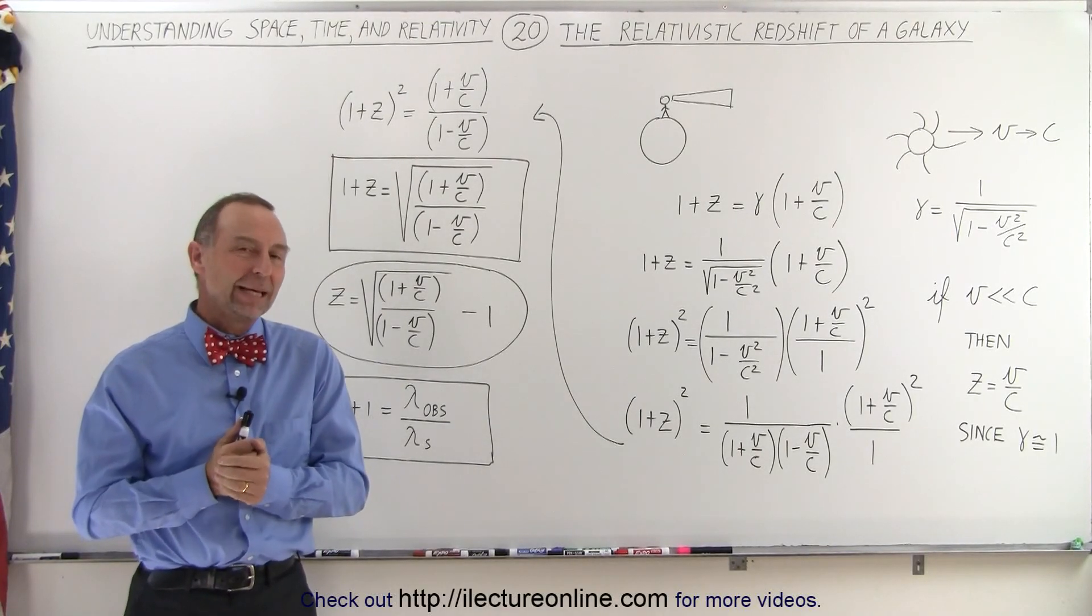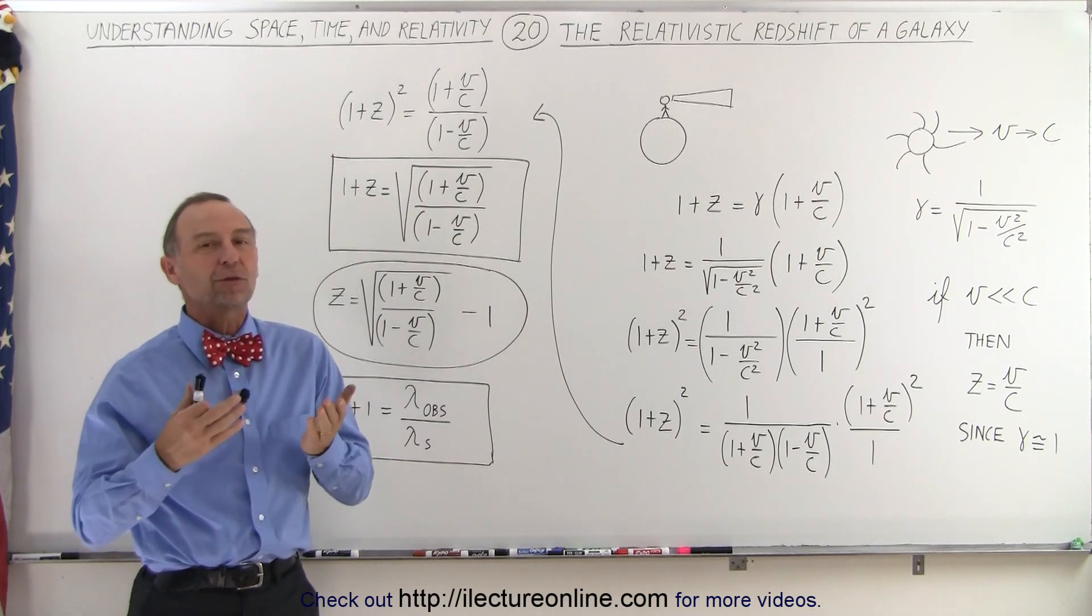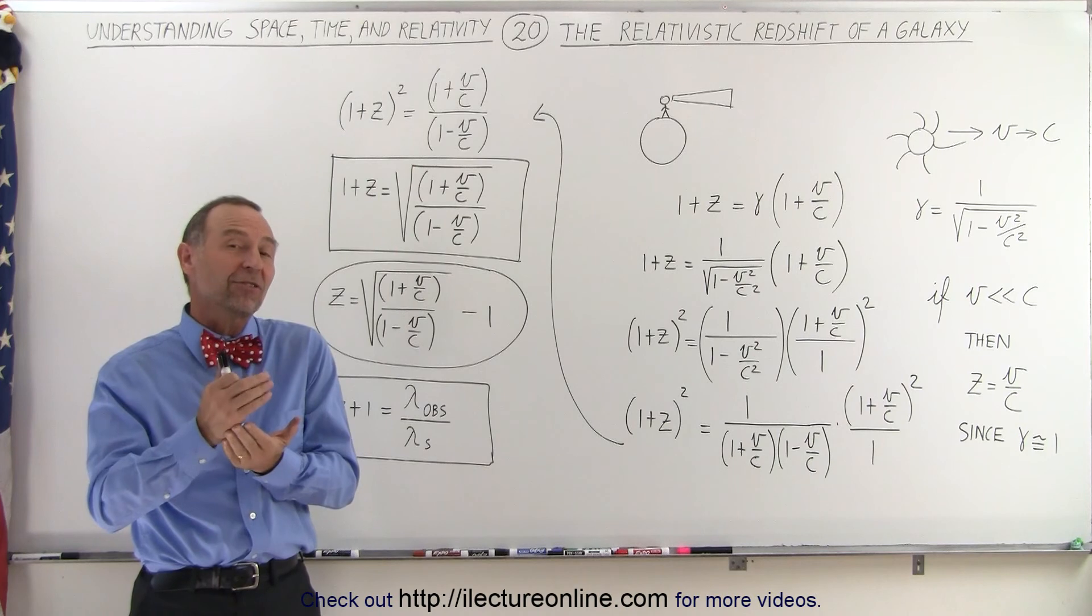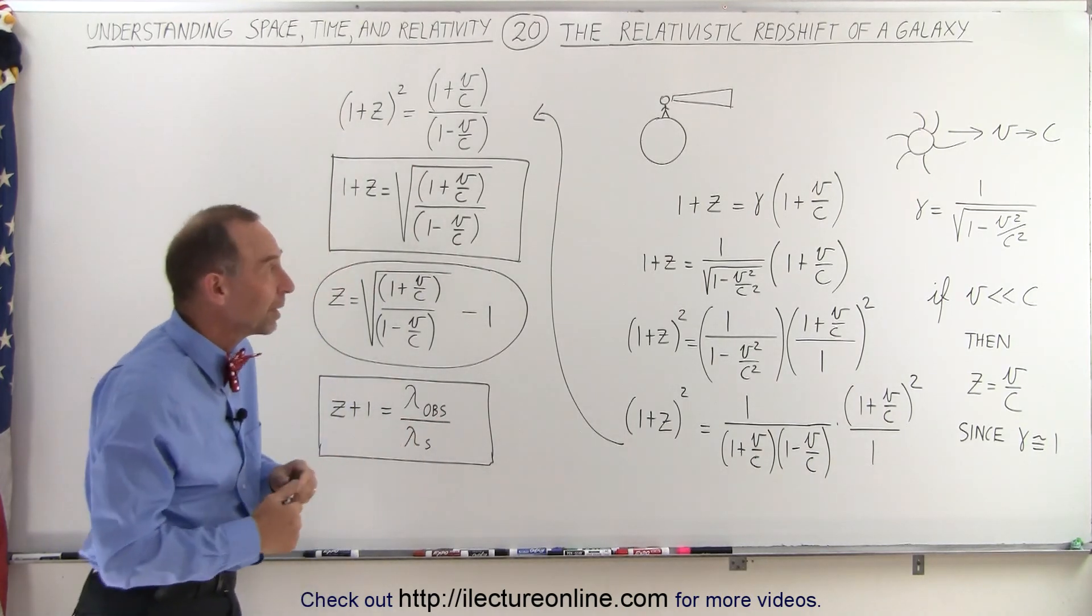Welcome to our lecture online. It turns out that the equations we derived in the previous videos on redshift and blueshift don't quite hold when the velocity becomes very large—in other words, when velocity approaches the speed of light.